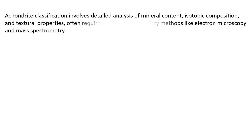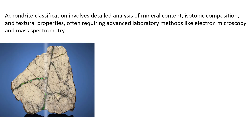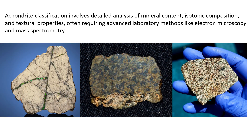Achondrite classification involves detailed analysis of mineral content, isotopic composition and textural properties, often requiring advanced laboratory methods like electron microscopy and mass spectrometry.